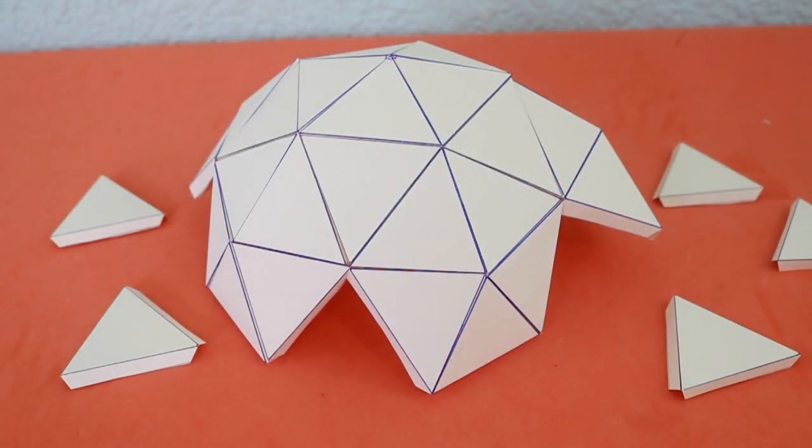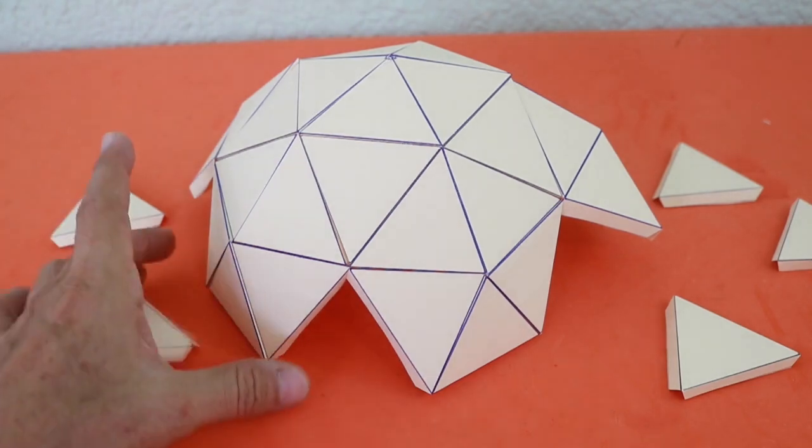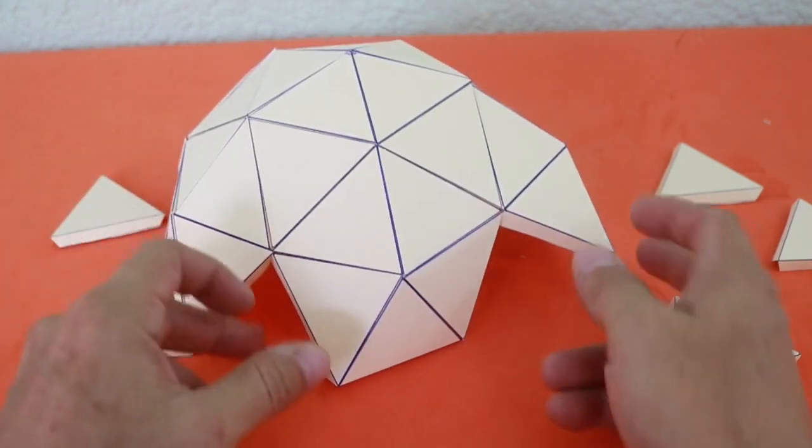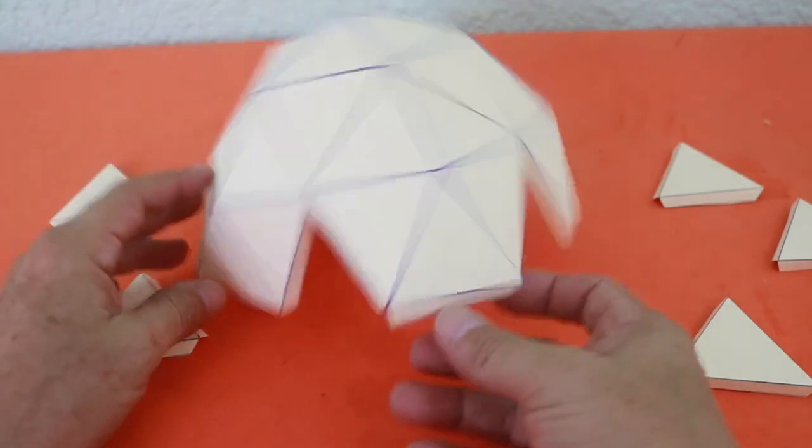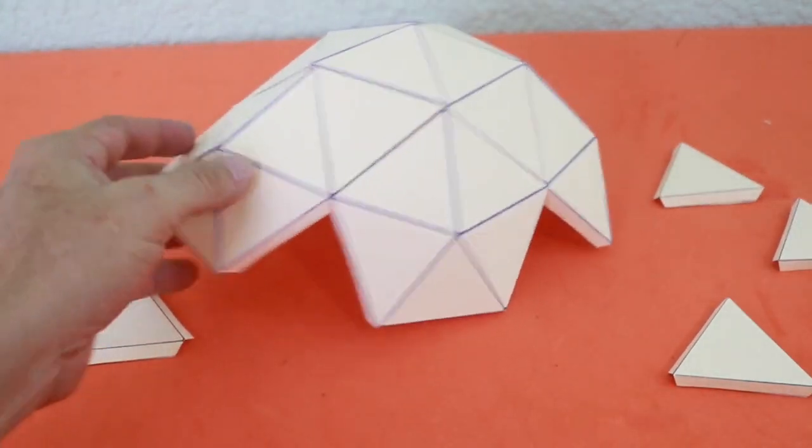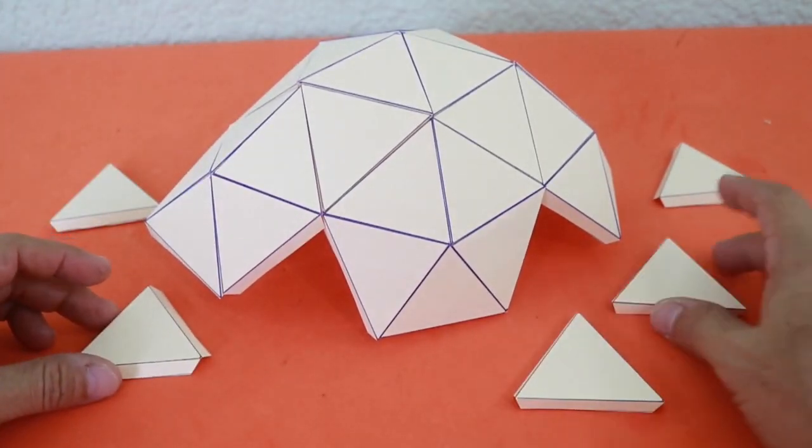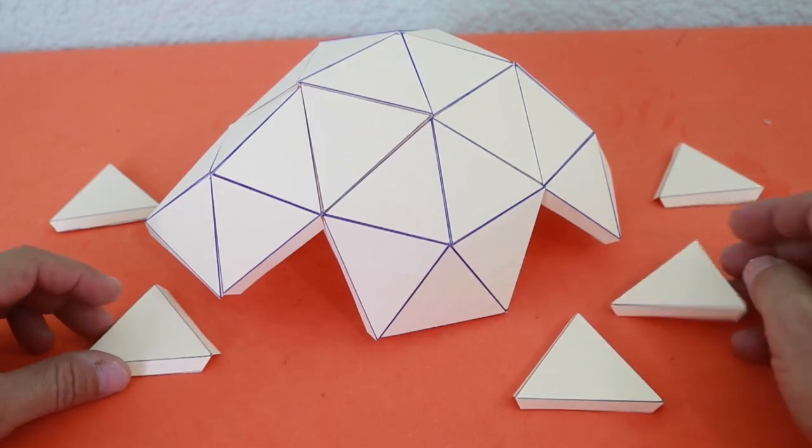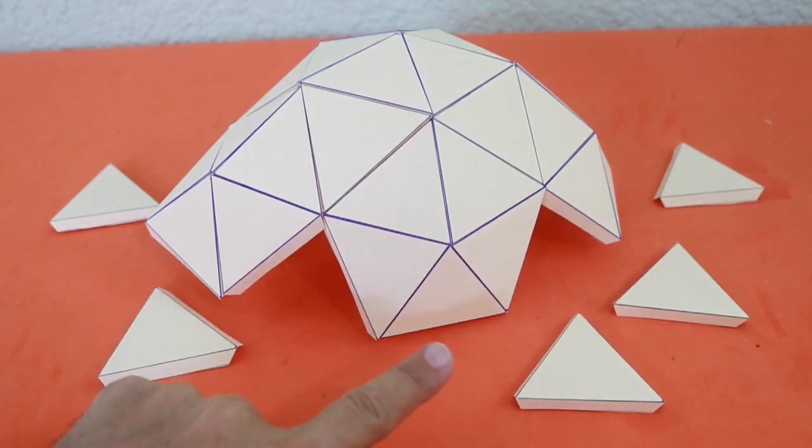Okay, we are almost finished. As you can see there are 5 holes in the periphery of the dome and we have 5 remaining AAA triangles that will be glued in these holes.